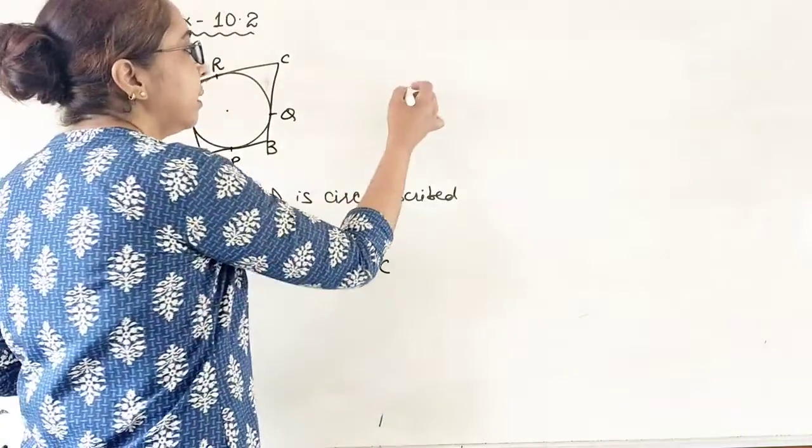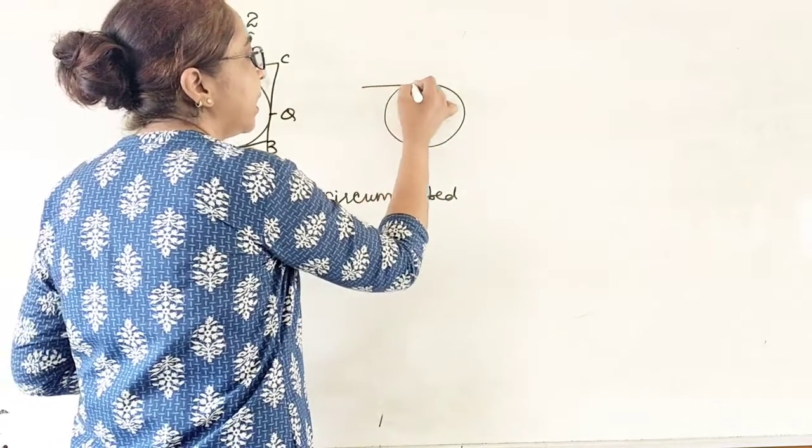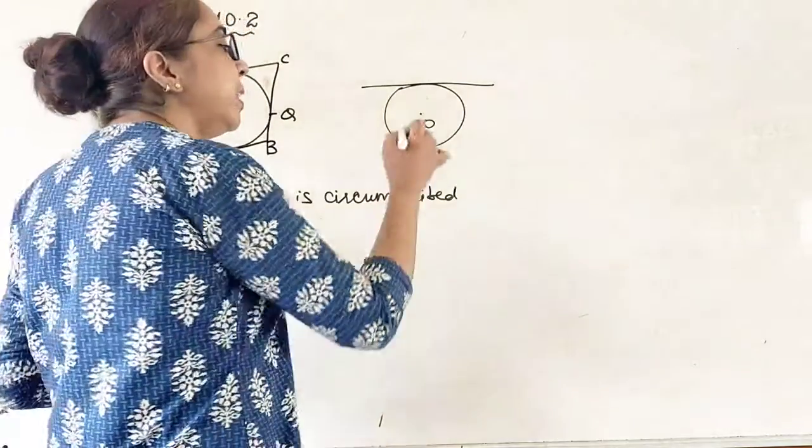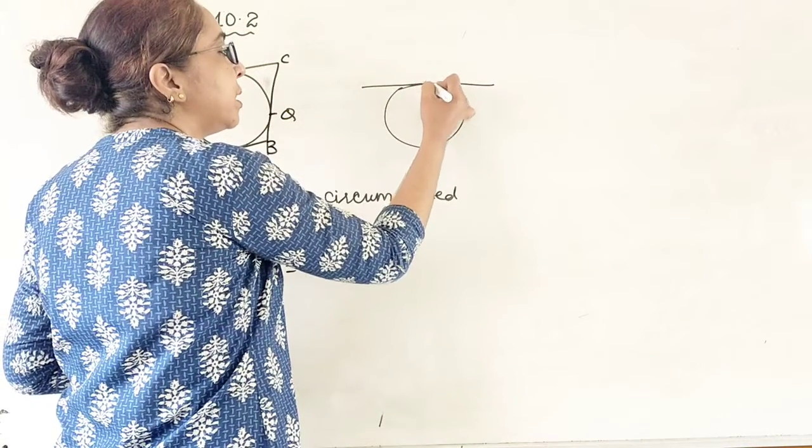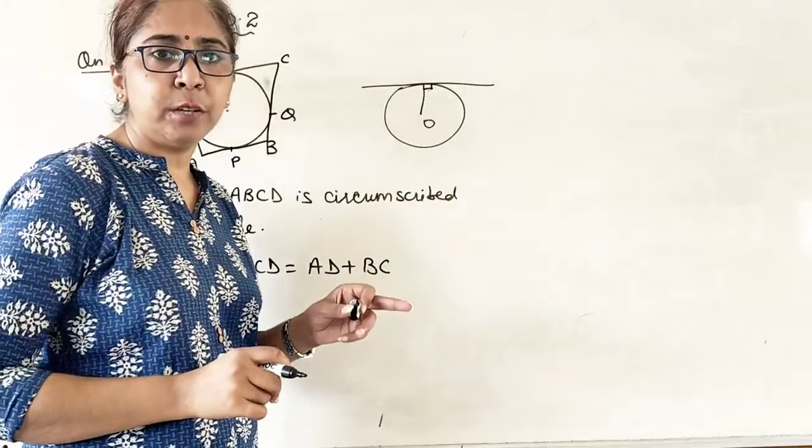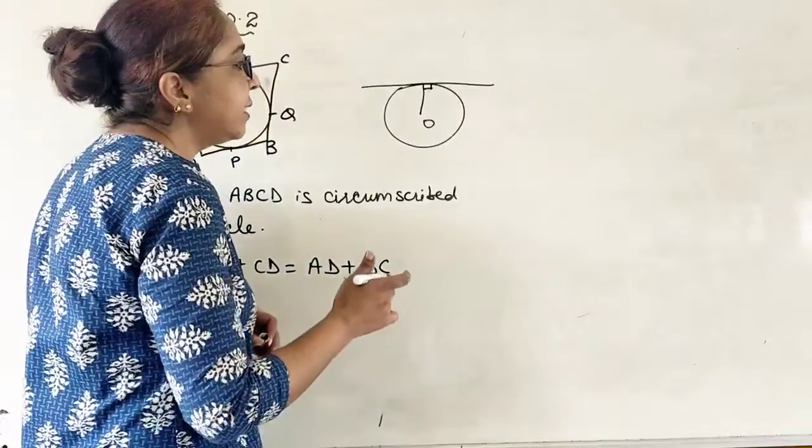You all know that if it is a circle with center O and if I draw a tangent to the circle, we all know that the radius is always perpendicular to the tangent. This is the first theorem of your circle chapter.